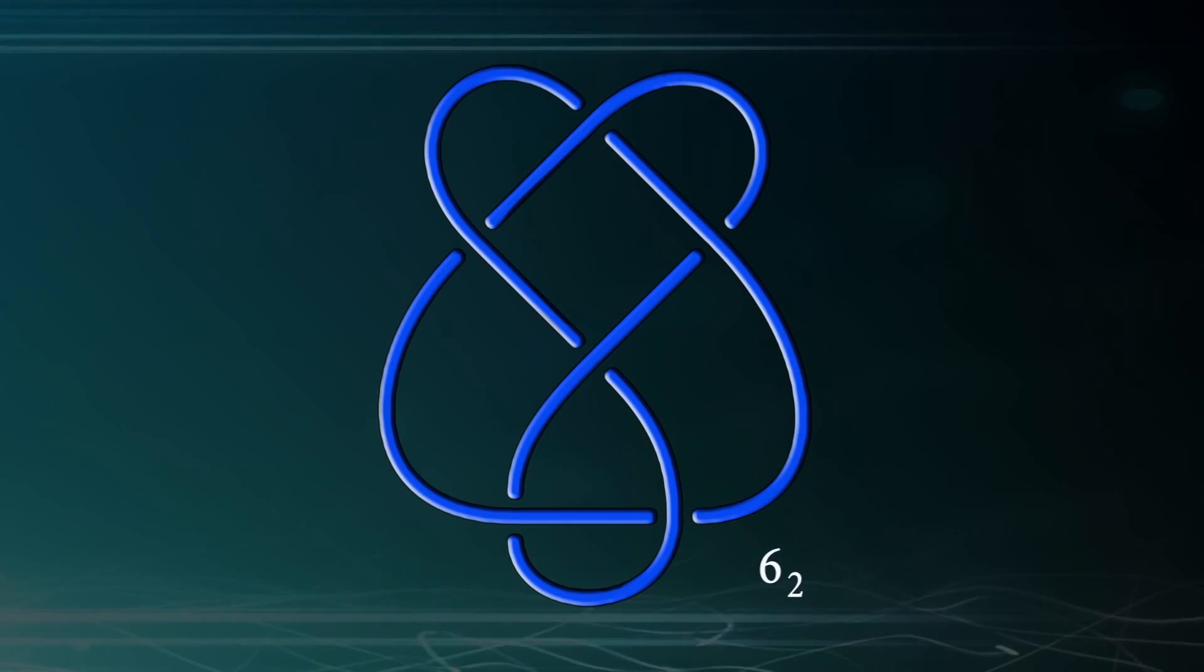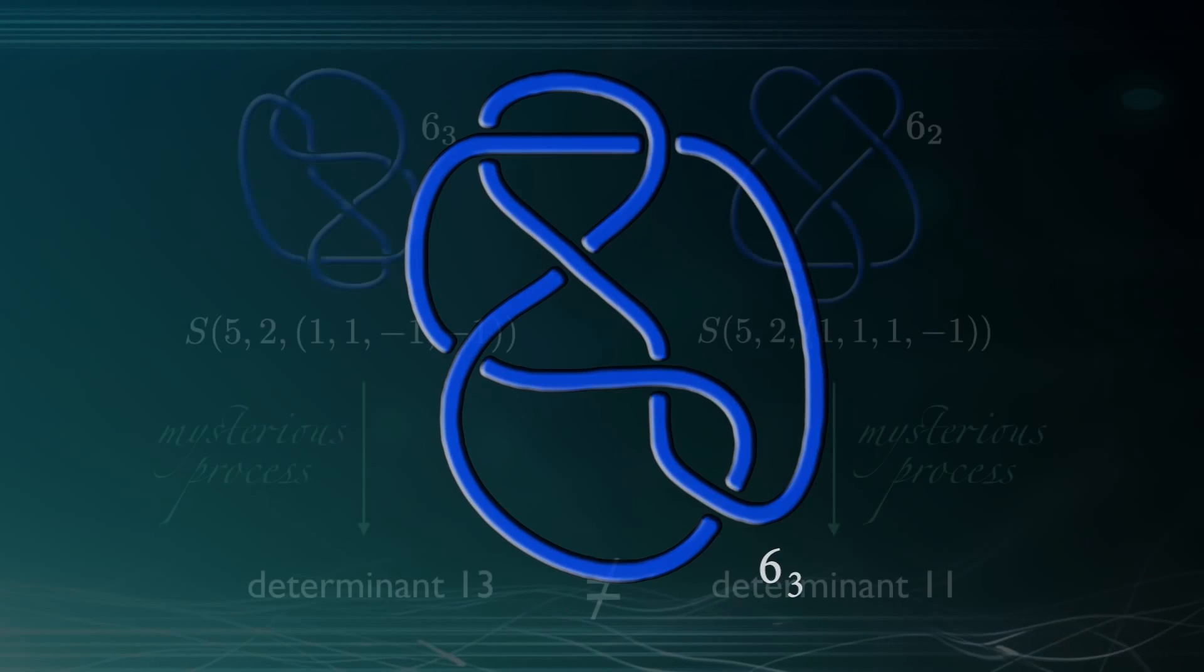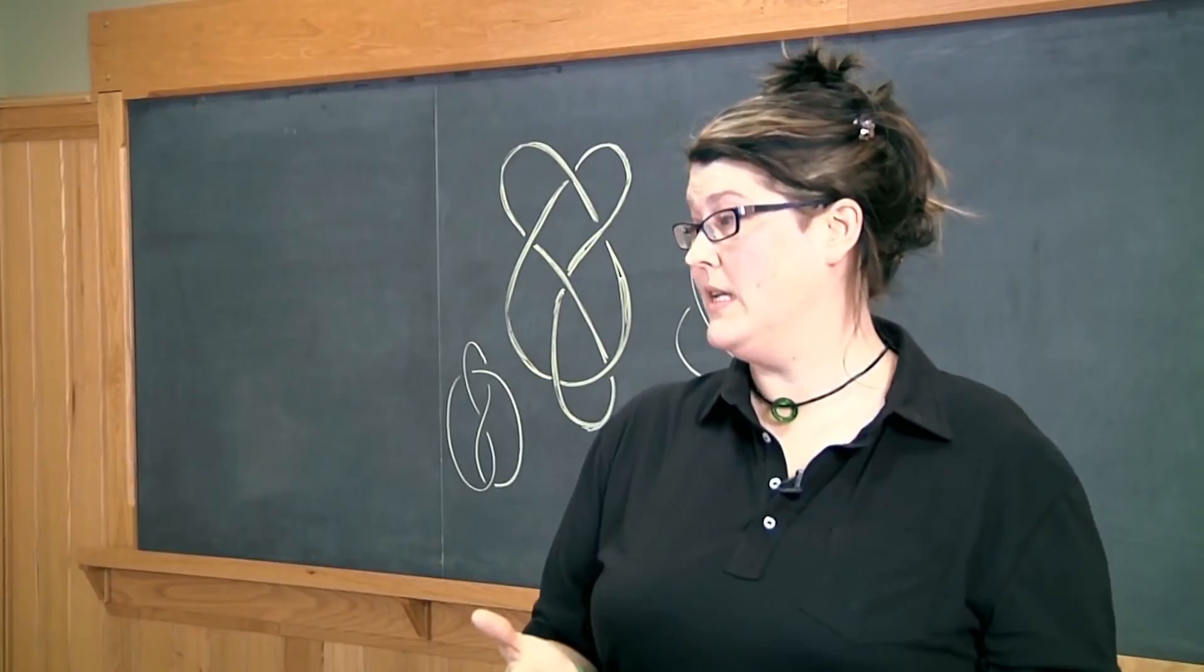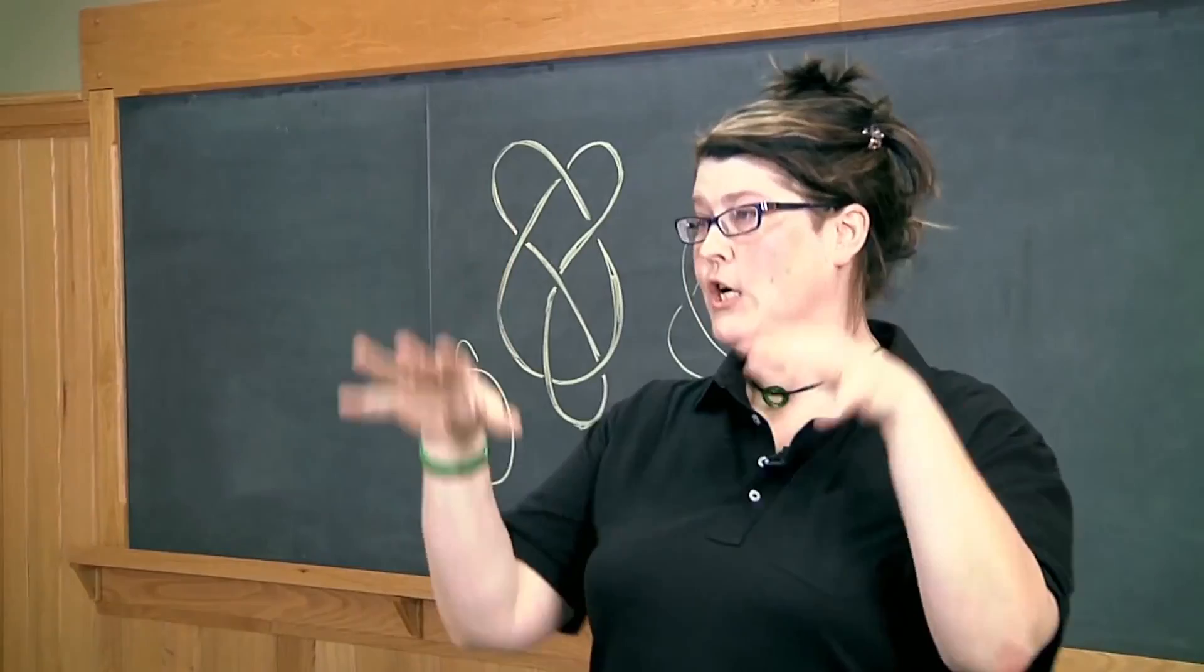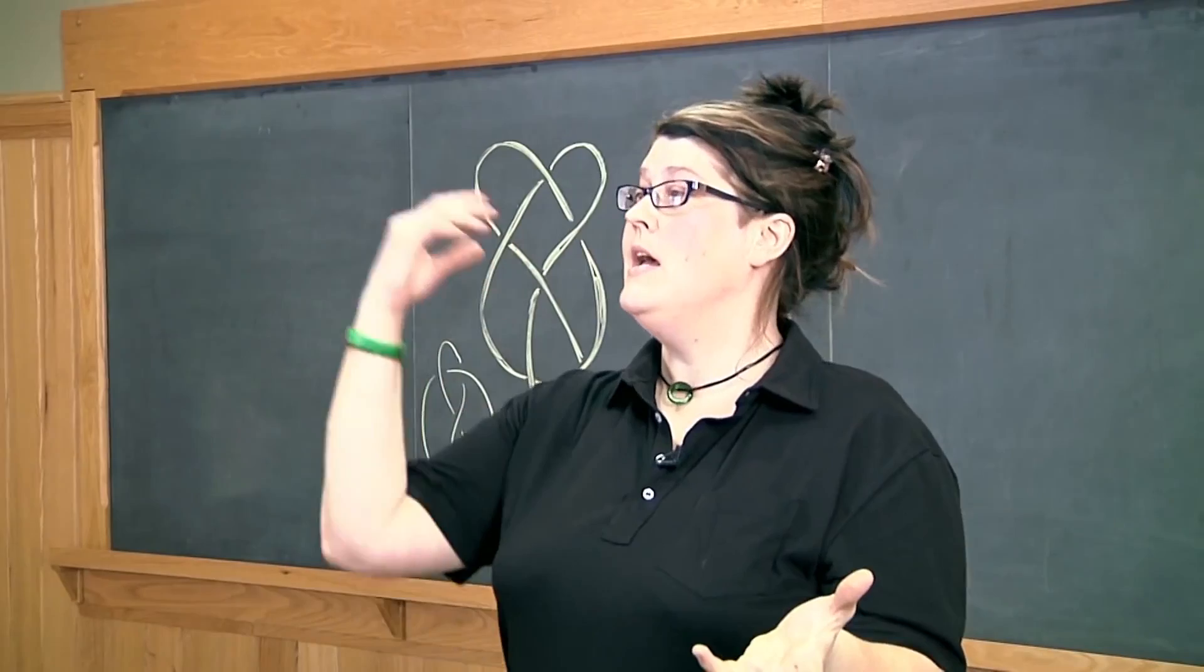And so for example you might associate a number to each knot. So to each knot say if you take the knot six two which you see on the board the bold one there and another knot say six three the next one in the knot table and you do some mysterious process that allows you to assign a number to each of those knots. That number that I want to talk about is called the determinant. Now I don't want to get into the details because I just sort of want to tell some stories in this video about how I'm using some technology. But just rest assured there's a way that we could label strands and crossings and create a matrix and take the determinant of minors and then that would be this thing that we call the determinant.